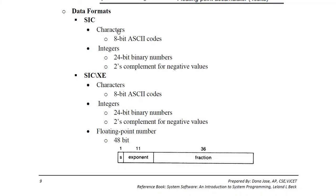One character size is equal to 8 bits. One integer size is equal to 24 bits, and negative numbers use 2's complement representation in SIC. For SIC-XE, characters, integers, and floating point numbers are supported. One character is 8 bits, one integer is 24 bits, and one floating point number is 48 bits. The floating point number format uses 1 bit for sign, the next 11 bits for exponent, and the last 36 bits for fraction.